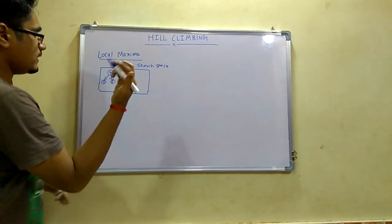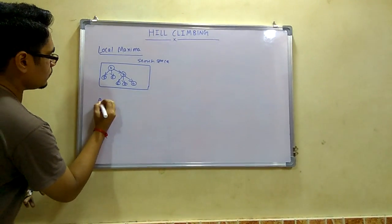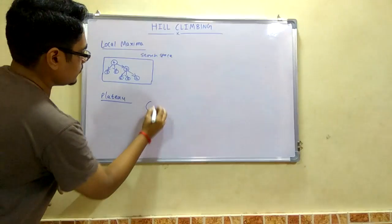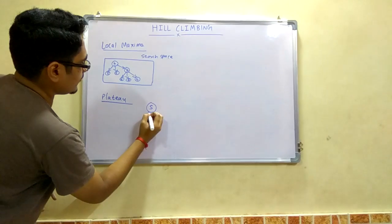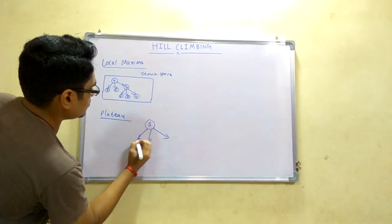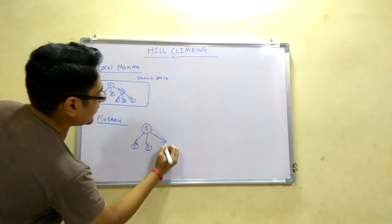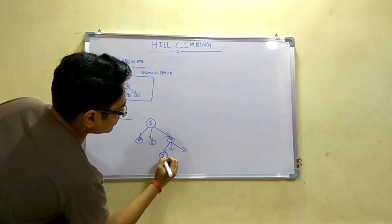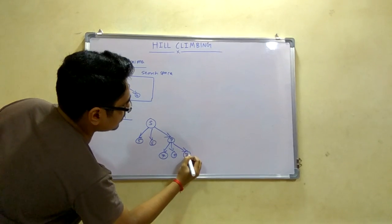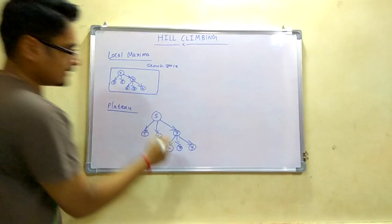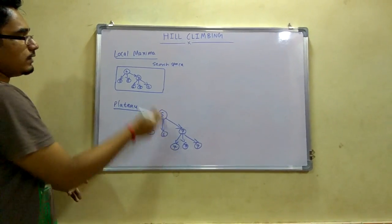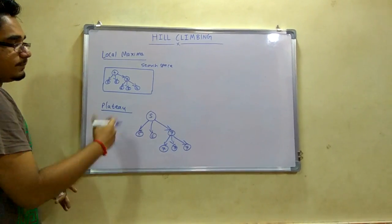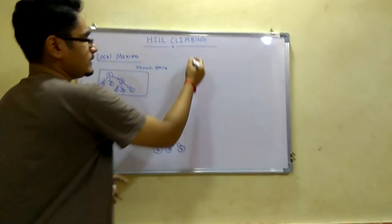Next is plateau. In plateau, for example, we have state S and its successor 5, 6, and 7. And 7 further has its successors 7, 7, and 7. Now this is equal. This equality represents there is a plateau. Whereas here it's variant, here it's equal, so this is plateau. Plateau can also be solved.